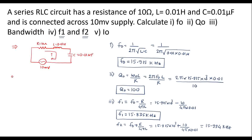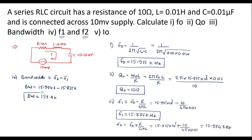Now we will calculate the bandwidth. Bandwidth is equal to F2 minus F1, that is 15.994 KHz minus 15.835 KHz. Finally, I0, the maximum current at resonance, is V by R, which is equal to supply voltage 10 millivolt divided by 10, which is equal to 1 milliamp. Therefore, I0 is equal to 1 milliamp.